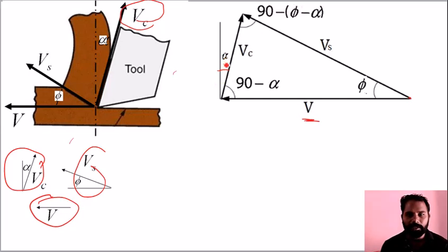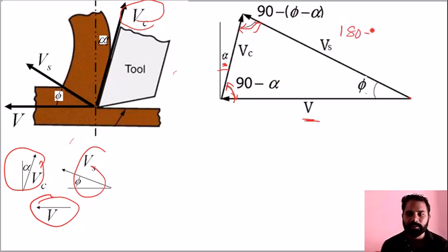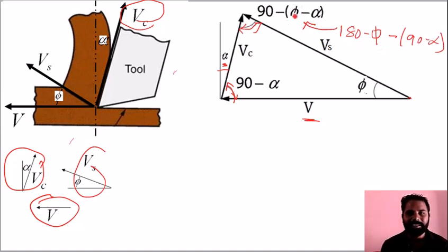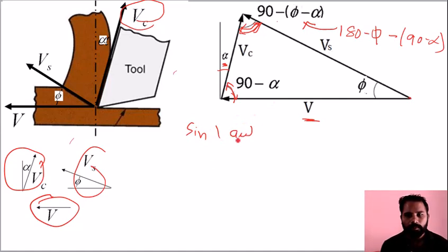In this closed triangle, if the rake angle is alpha, then the bottom angle is 90 minus alpha, and the shear angle is phi. Since all triangle angles must sum to 180 degrees, the remaining angle is 180 minus phi minus (90 minus alpha), which simplifies to 90 minus phi plus alpha.